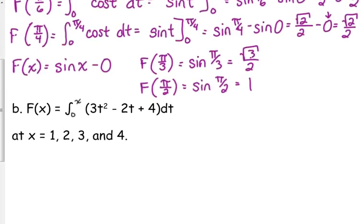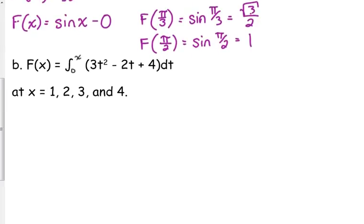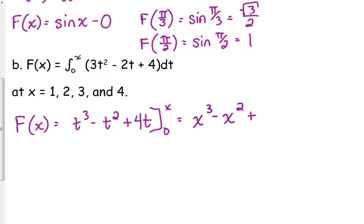So let's look at this next example the same way. We're not going to go through that long process every single time. We're going to look at this from the perspective of F of x equals the anti-derivative of 3t squared is t cubed, the anti-derivative of negative 2t is minus t squared, the anti-derivative of 4 is 4t. We're going to evaluate that from 0 to x. So that is x cubed minus x squared plus 4x minus, plugging in 0 for all those t's, it's 0.